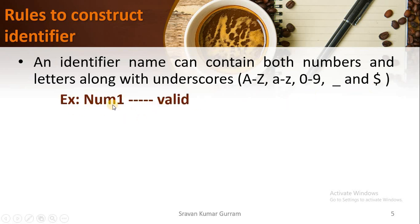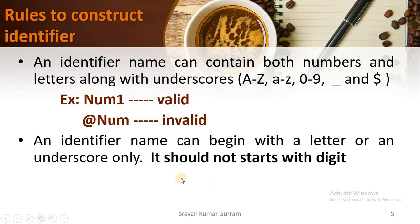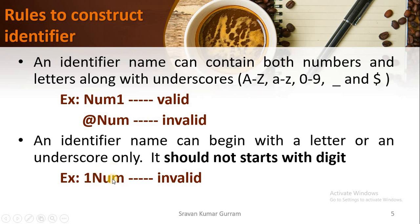For example, number1 is a valid identifier because we are using only alphabets and numbers. The identifier @number is invalid because the at-rate symbol is not in the allowed set — you should not use any special symbol except underscore and dollar. Also, an identifier name can begin with a letter or an underscore only; it should not start with a digit. For example, 1number, where the identifier starts with a digit, is invalid.